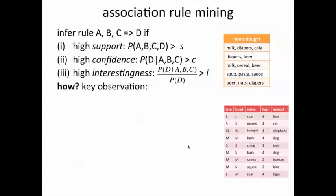The key observation to getting an efficient algorithm for association rule mining was made by Agarwal and Srikanth in the 90s, and that observation was that if a combination A and B has support greater than s, that means it occurs more than s times in the data, then so does A and B individually, because otherwise the combination A and B would not occur more than s times.